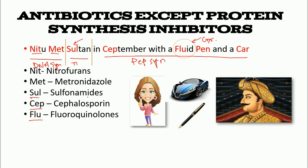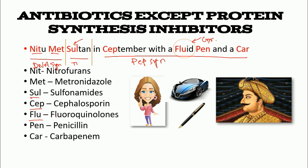FLU is a little different — that's why it's put in a circle — standing for fluoroquinolones, whose job is DNA gyrase inhibition. Gyrase is an enzyme required to release DNA supercoil tension. Then PEN stands for penicillin, also a peptidoglycan synthesis inhibitor. And CAR stands for carbapenem, also a peptidoglycan inhibitor.